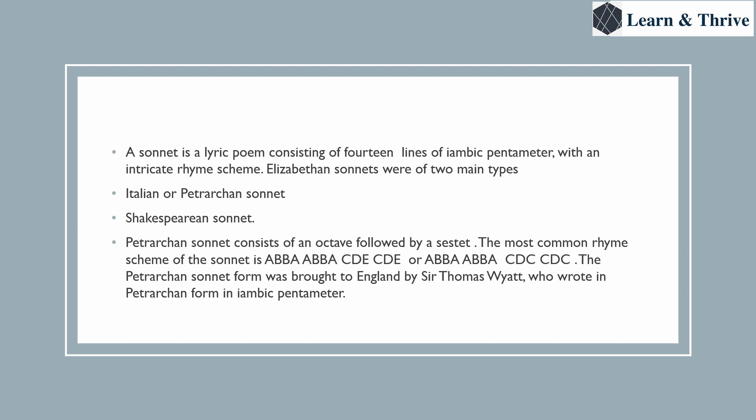The rhyme scheme Thomas Wyatt was following was: a b b a a b b a — this is your octave, meaning your eight lines — followed by a sestet, which is your six lines. So the Petrarchal sonnet consists of an octave followed by a sestet.